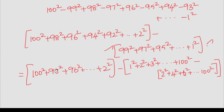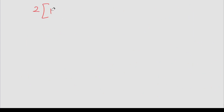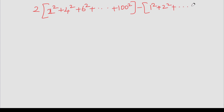Now this term is the same. The minus term and the plus term: what is the minus number? All here it is plus, so the term is minus. This term is plus. So the factor becomes 2 times: 2 into 2 square, 4 square — so this will be up to 100 square. Minus: 1 square, 2 square, up to 100 square. So this is the generalized form that we have to solve.